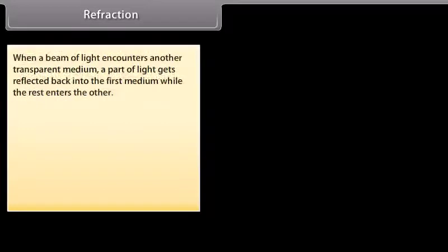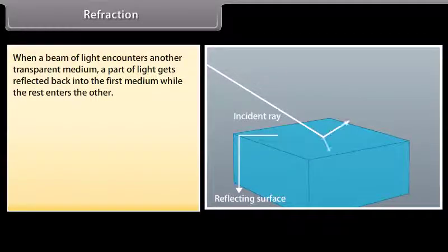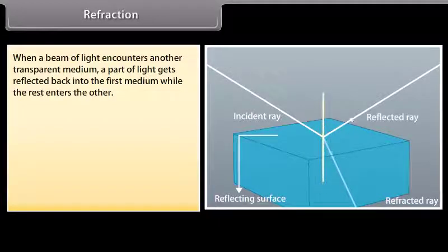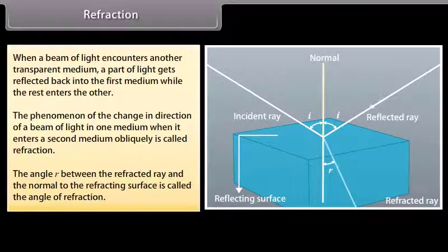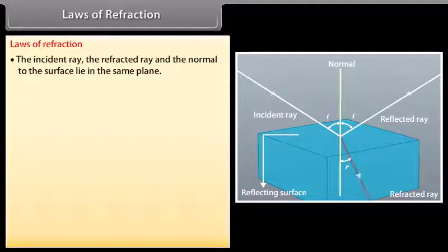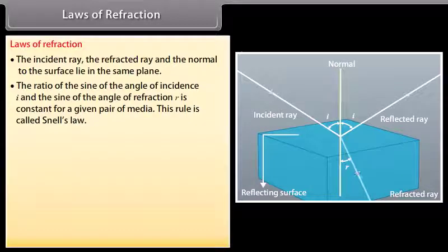Refraction: When a beam of light encounters another transparent medium, a part of light gets reflected back into the first medium while the rest enters the other. The phenomenon of the change in direction of a beam of light in one medium when it enters a second medium obliquely is called refraction. The angle R between the refracted ray and the normal to the refracting surface is called the angle of refraction. Laws of refraction: The incident ray, the refracted ray and the normal lie in the same plane. The ratio of sine of the angle of incidence to sine of the angle of refraction is constant for a given pair of media — this is called Snell's law.